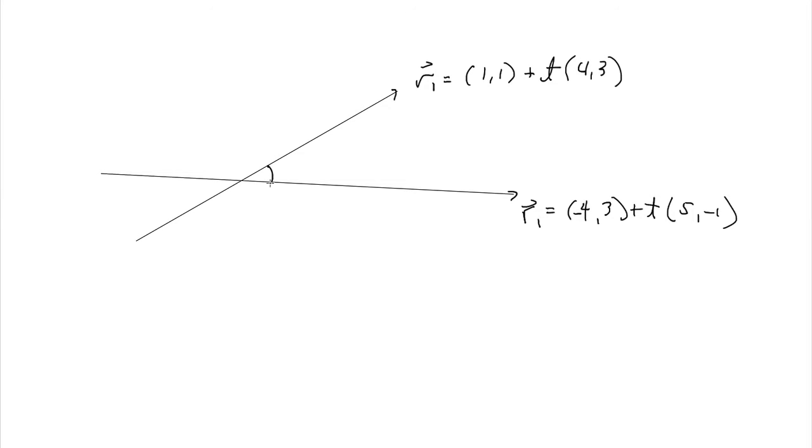And what we want is, we want to find this angle. That's the goal here. And we can do that by what? Does something come to mind? If you're given two lines with point and direction, how can we find this angle?